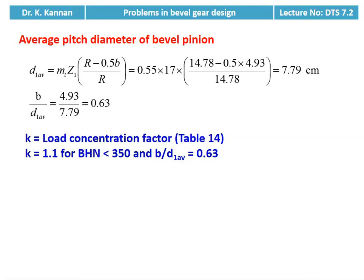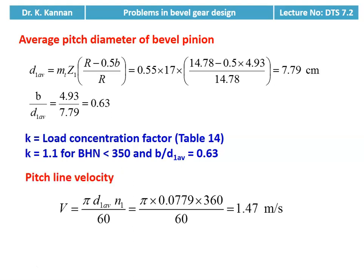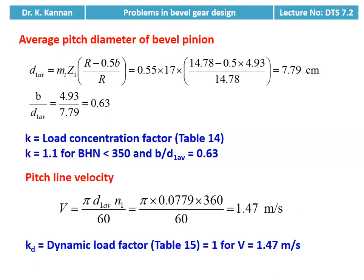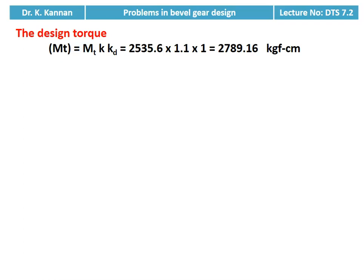Load concentration factor from table number 14: for hardness less than 350 BHN and b/d1_avg = 0.63, K = 1.1. Pitch line velocity: V = π × d1_avg × N1 / 60 = π × 0.0779 × 360 / 60 = 1.47 m/s. Dynamic load factor = 1 from table 15 for velocity 1.47 m/s. Design torque for checking: MT(design) = MT × KKD = 2535.6 × 1.1 × 1 = 2789.16 kilogram force centimeter.